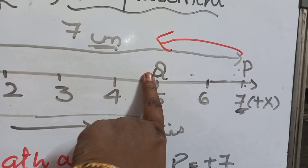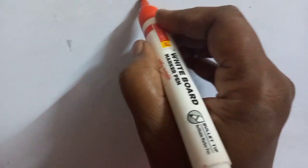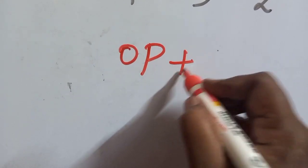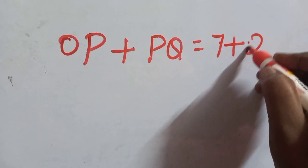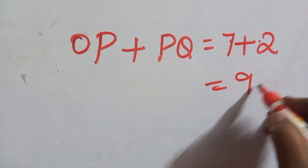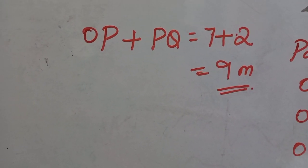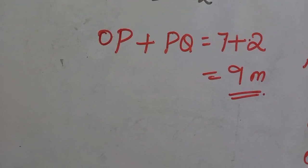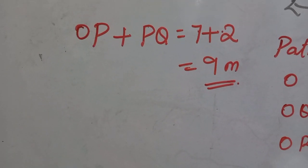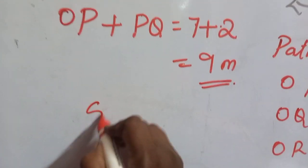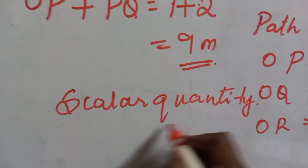Total path length = OP + PQ = 7 + 2 = 9 meters or centimeters. Path length is the total distance traveled by the body from one point to another point, and it is a scalar quantity.